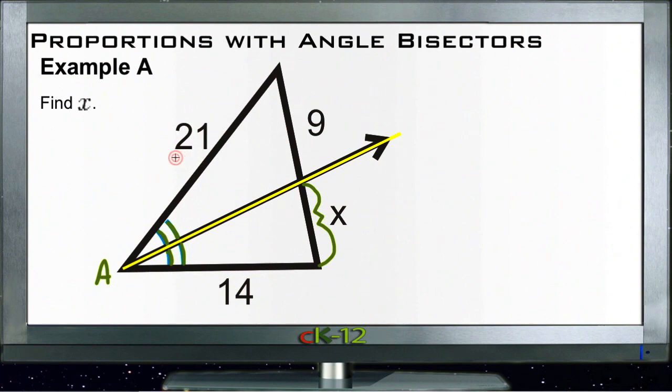So that tells us here that 21 compared to 9 is going to be the same as x compared to 14. So let's write that out. We have 9 over 21, small side big side, compares to x over 14, small side big side. And 9 over 21, does that reduce? Looks like it reduces by 3.